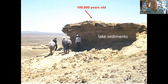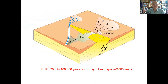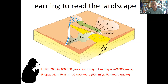We can date the uplifted lake sediments — they're a hundred thousand years old — and the lake has been uplifted 70 meters in that time. Each earthquake uplifted about a meter, so we need about 100 earthquakes over 100,000 years — an earthquake about every thousand years. During that same time, the river has been pushed about 5 kilometers sideways. Every time there's an earthquake, the ridge grows a little — about 50 meters longer — which eventually caused the river to go around the end.